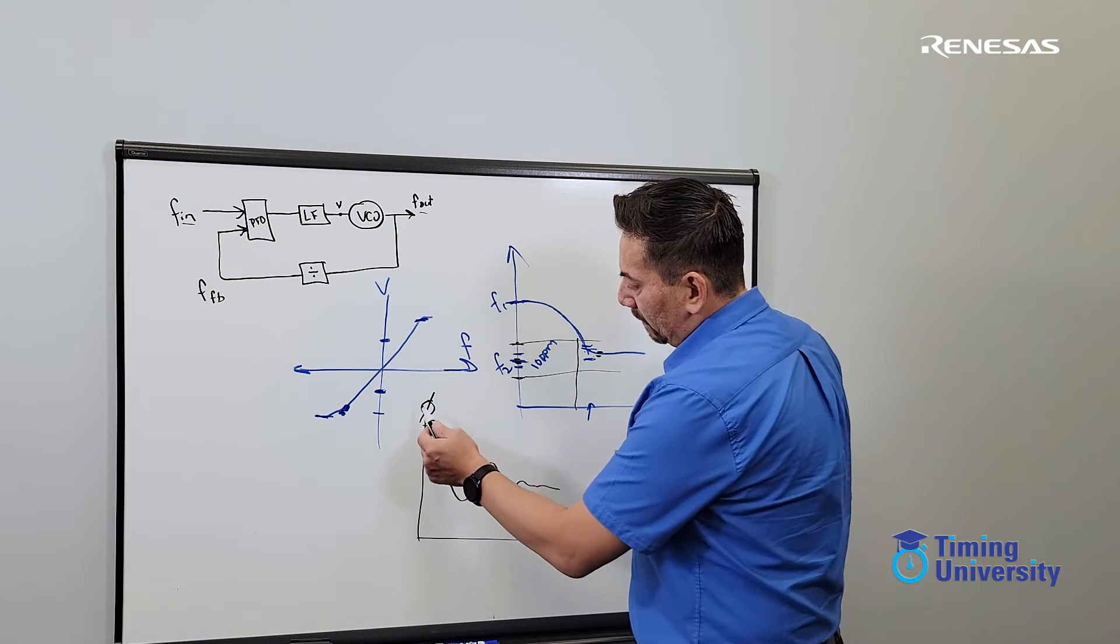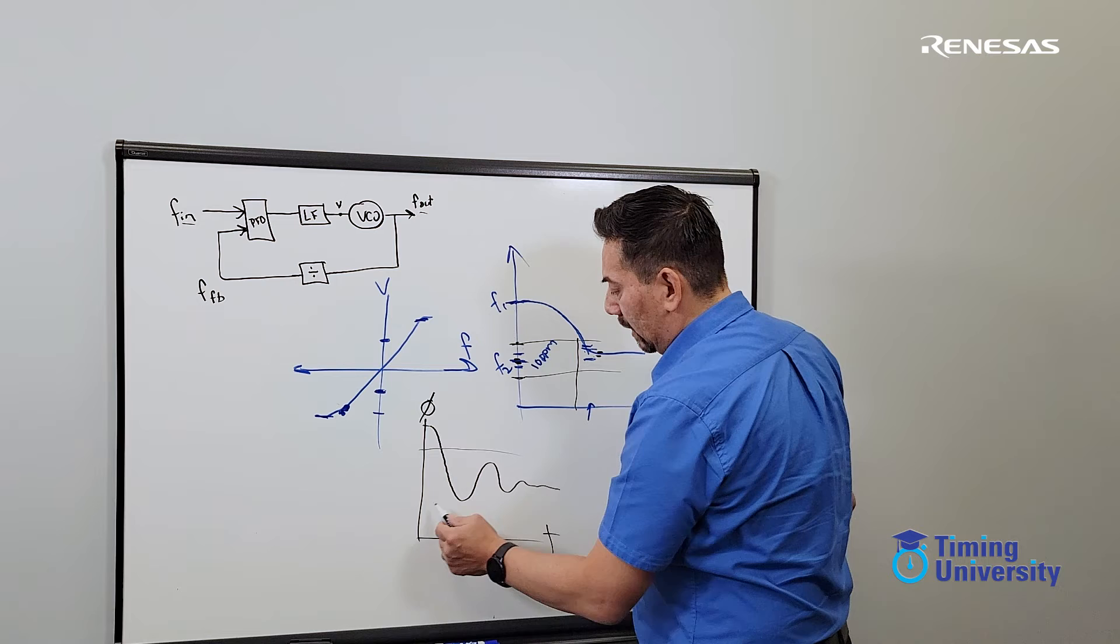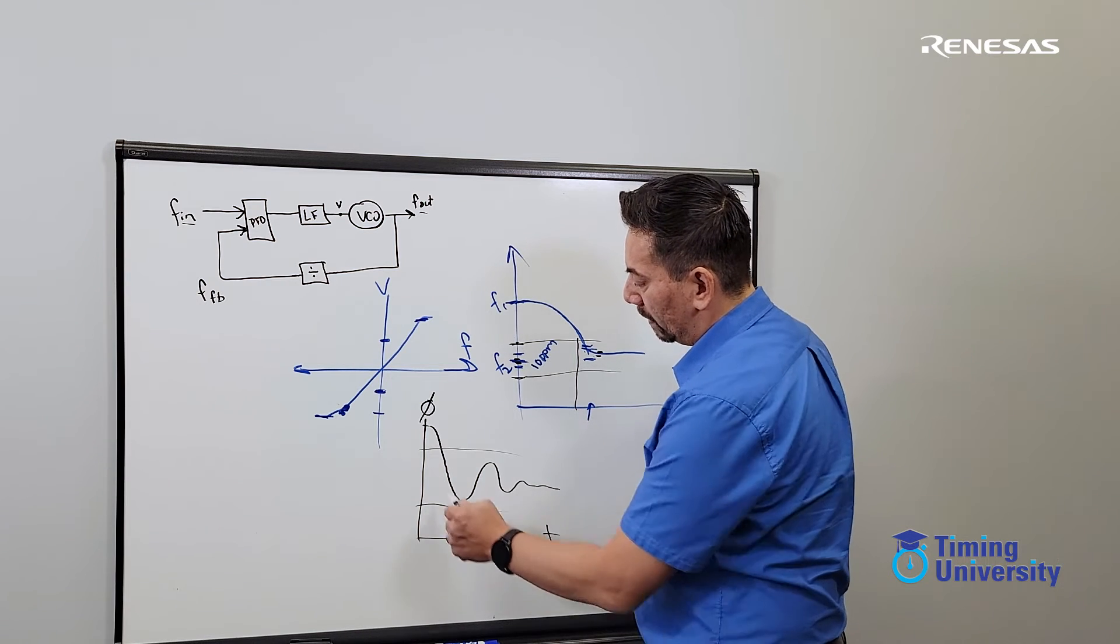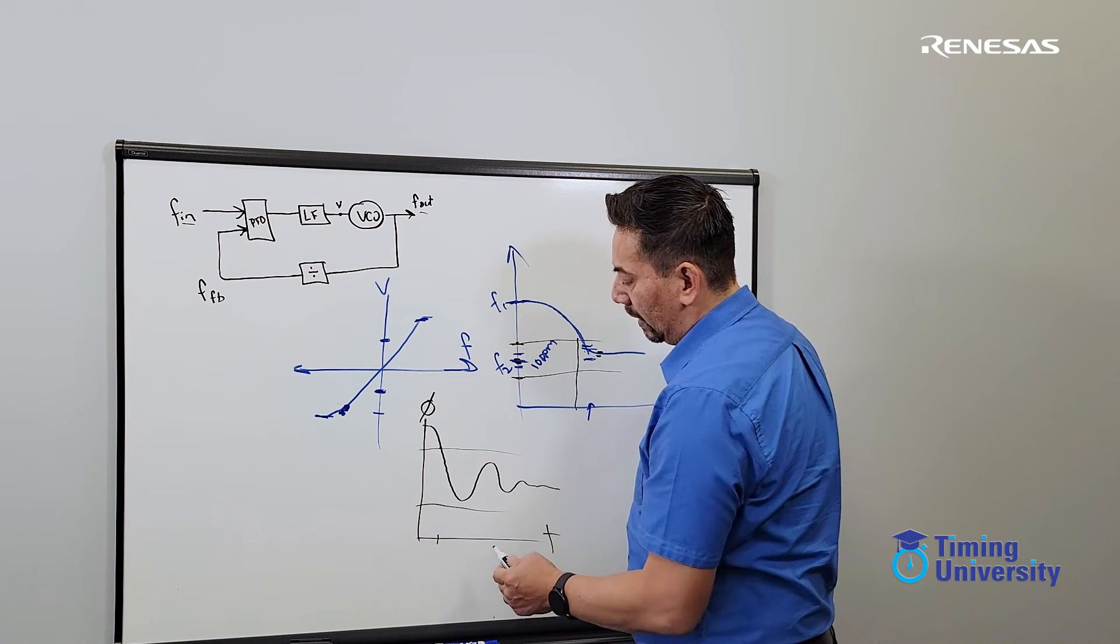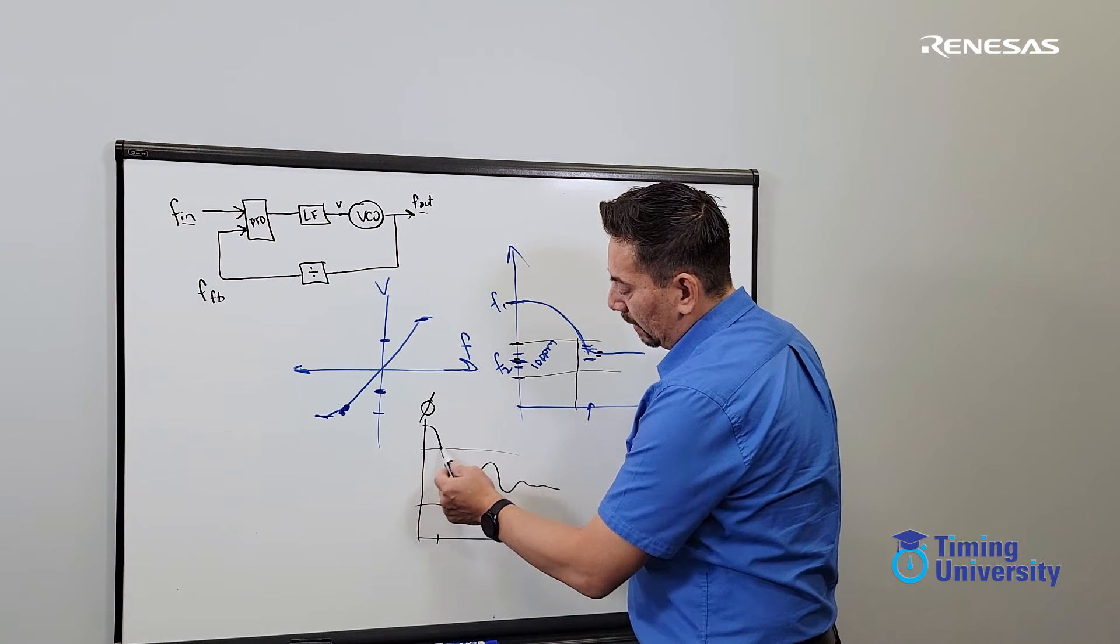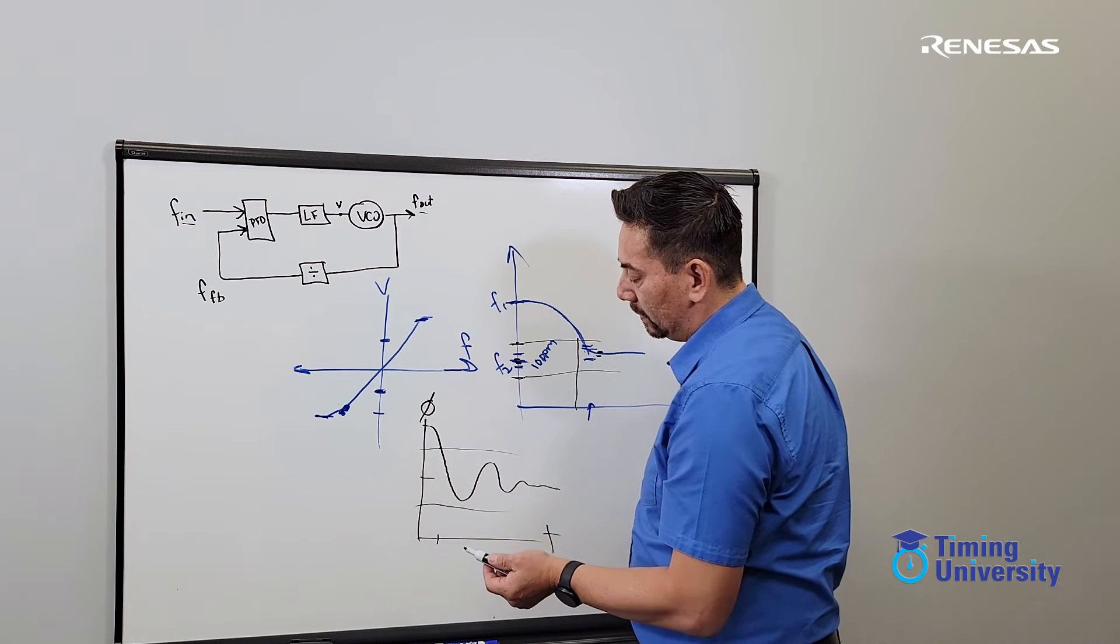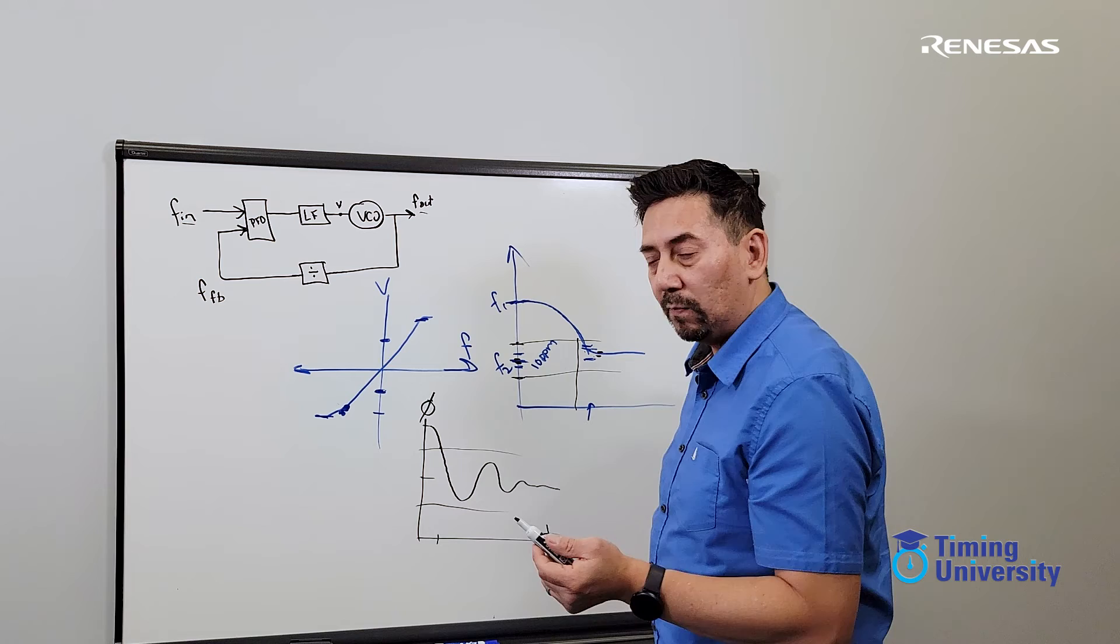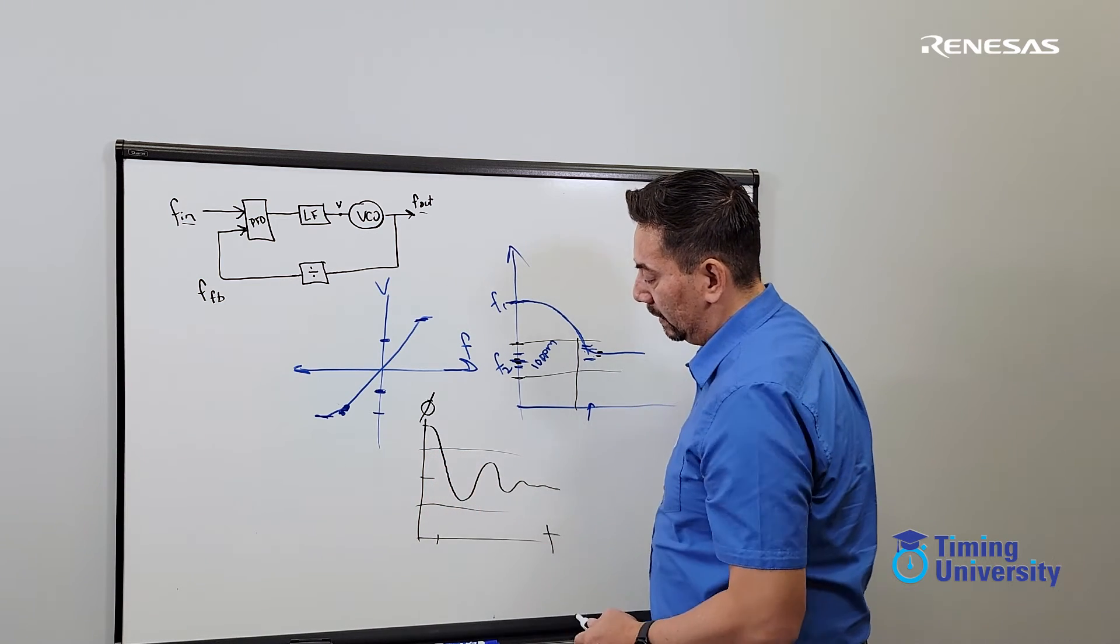But again, if we're looking at this output phase as it's settling, and we have a very loose criteria, then we could say the lock time is very short. But we could also not only set some criteria of how wide the allowable phase is allowed to be, but we can also set a window of how long this phase remains within the window.